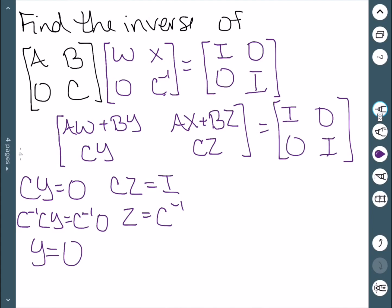We'll now move to the top equation, the first one. AW plus BY is equal to the identity. I know that Y is zero, so this is now just AW is equal to I. And the fact that they're square now tells me that W is equal to A inverse. So now I know what W looks like.